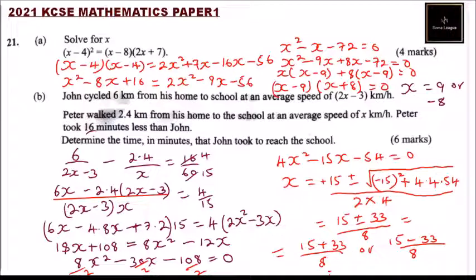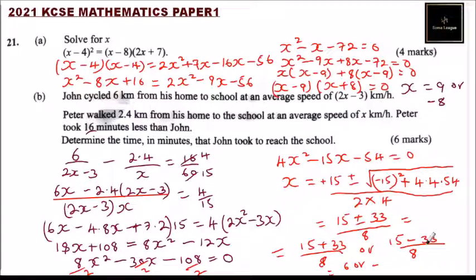Since we are dealing with speed (which cannot be negative), we ignore x equals minus 2.25 and take x equals 6.